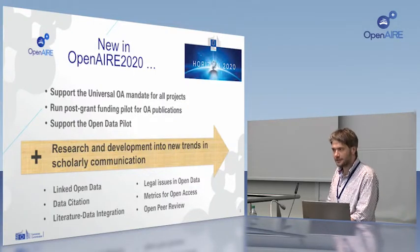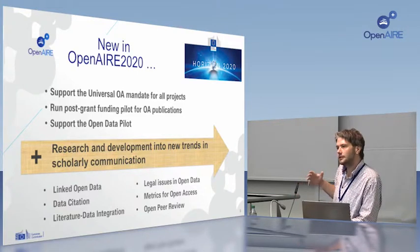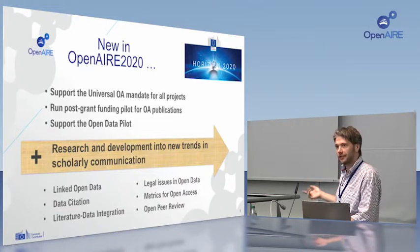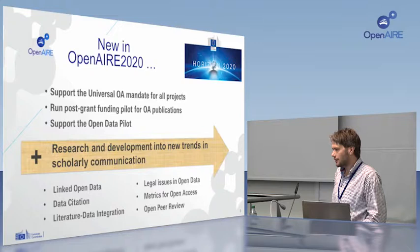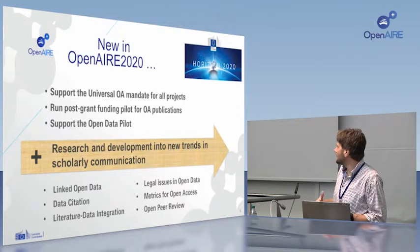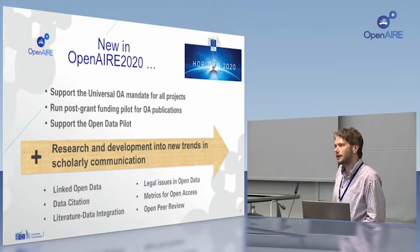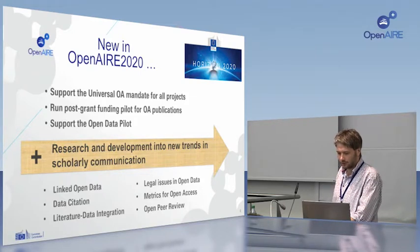OpenAIRE 2020 has broadened its remit into open science. Our information is all openly available via API, and we're also making it available now via linked open data — that service is already in beta. We are doing lots of things with the RDA and the World Data System in terms of data citation and literature-data integration. We're also looking at legal issues in open data, issues of data protection and public sector information, new metrics for open access, and one more task: open peer review.